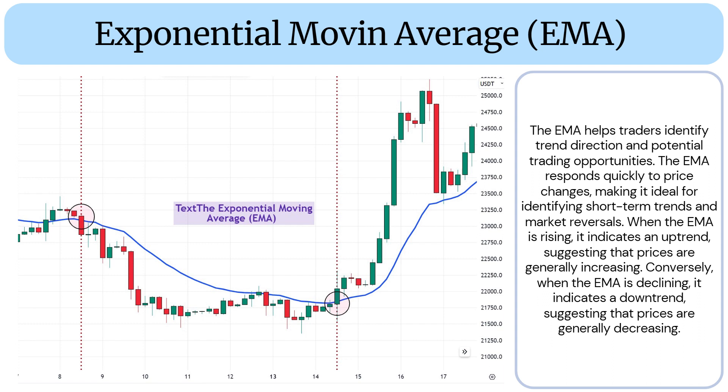When the EMA is rising, it indicates an uptrend, suggesting that prices are generally increasing. Conversely, when the EMA is declining, it indicates a downtrend, suggesting that prices are generally decreasing.